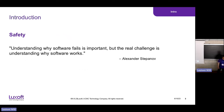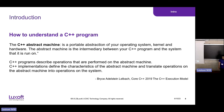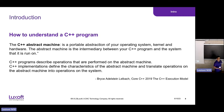Another important definition comes from Alexander Stepanov: understanding why software fails is important, but the real challenge is understanding why software works. It's very important to understand how our software works, and this brings us to a very important concept — the core of the C++ language specification called the C++ abstract machine. How many of us go and read the language specification, whether for C++14, 17, 20, or 23?